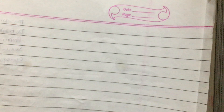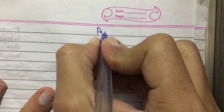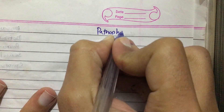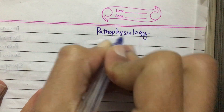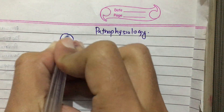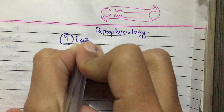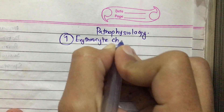Let us discuss the pathophysiology of malaria. The first important point is erythrocyte changes.